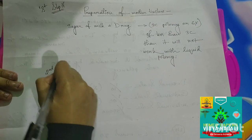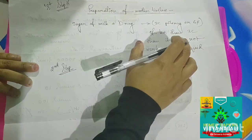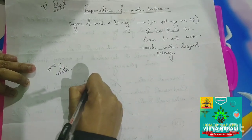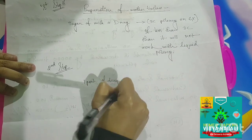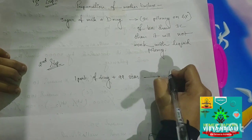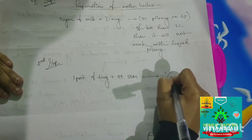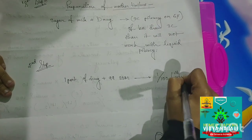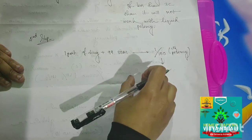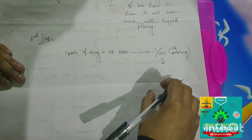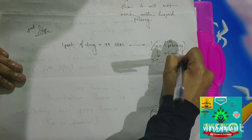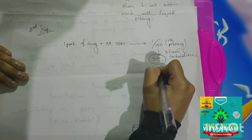In the second step, we take one part of the drug from that 3C and 99 parts of sugar of milk. The ratio will be 1 part of the drug and 99 parts of sugar of milk. We triturate and it becomes 1 by 100, that is the first potency. Similarly, we make second potency and third potency from one part of drug and 99 parts of sugar of milk. It will be in powder form.